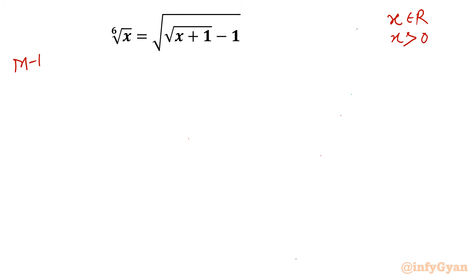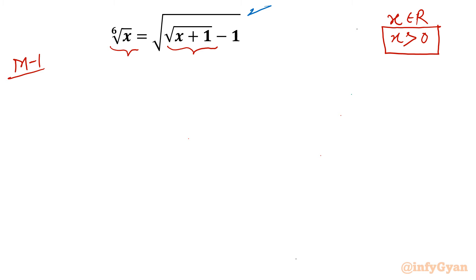Let me write Method 1 and I will begin with the domain of the equation. For square root of (x plus 1), x should be greater than minus 1. And on the left hand side, 6th root of x requires x to be positive. So the conclusion is x should be positive. Now I will begin by squaring both sides, since the right hand side has a square root term.